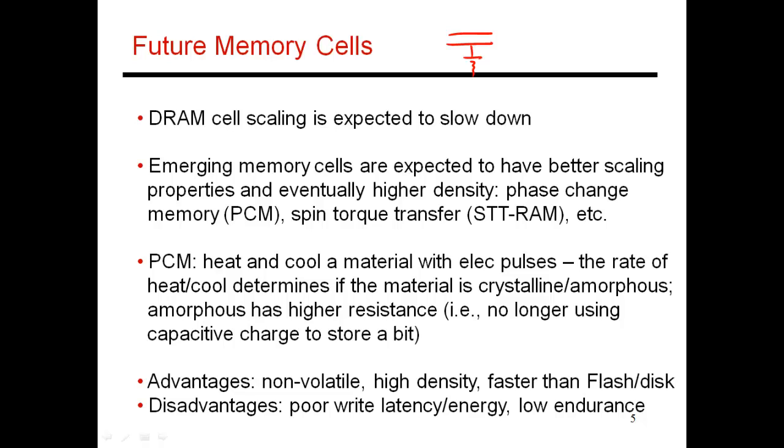So one alternative that has been considered is called a phase change memory cell. So this is a piece of material. If you heat up the material and then cool it, depending on your rate of heating and cooling, the eventual material is either amorphous or it is crystalline. If it is amorphous, it has high resistance. If it is crystalline, then it has low resistance. And so this is an alternative way to store state within these cells.